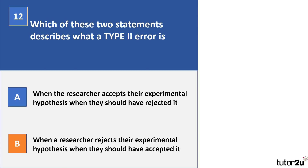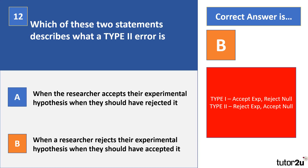Question 12. Which of these statements describes what a Type 2 error is? A, when the researcher accepts their experimental hypothesis when they should have rejected it. B, when a researcher rejects their experimental hypothesis when they should have accepted it. The correct answer is B. In a Type 1 error, you accept your experimental hypothesis and reject the null. In a Type 2 error, you reject your experimental hypothesis and accept the null. A Type 1 error may occur when the significance level is too lenient; a Type 2 error when it's too strict.